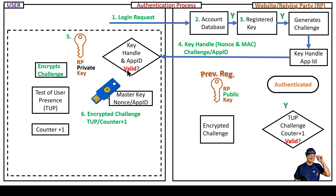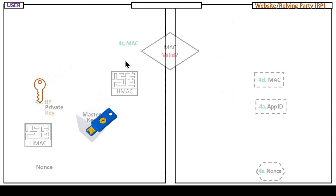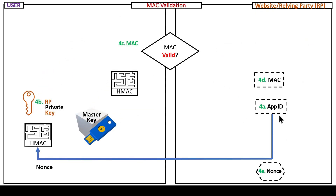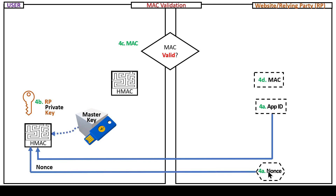At that point, the hardware security key has to validate the information it is receiving from the service provider. The process is: the app ID that was previously stored on the website or relying party, along with the nonce stored by the service provider, is hashed along with the master key to dynamically generate the private key.